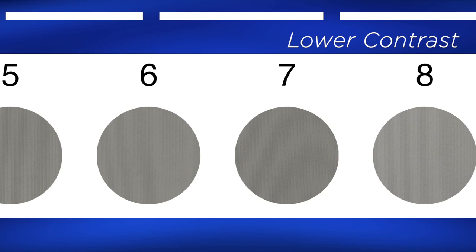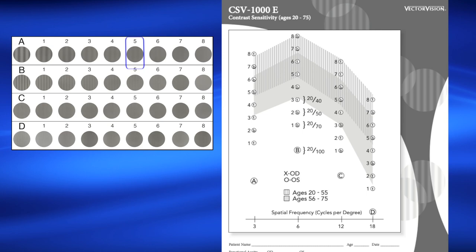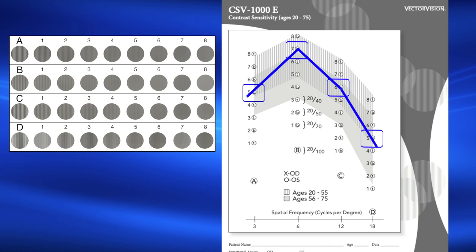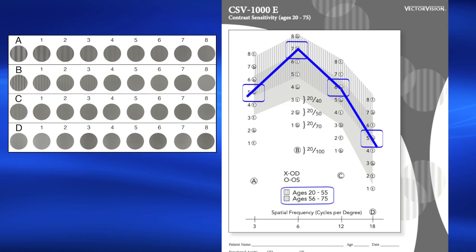The lowest contrast bar that you can see determines your contrast sensitivity. This process of testing at different bar sizes and different contrast levels creates a curve for vision called a contrast sensitivity curve. This curve can be used for many purposes: to help diagnose eye disease, determine the benefits of treatment, or as a measure of overall quality of vision. The curve also allows you to compare your contrast sensitivity score to others of your same age group.